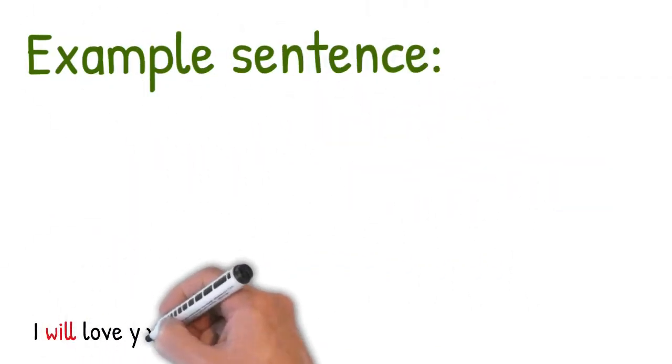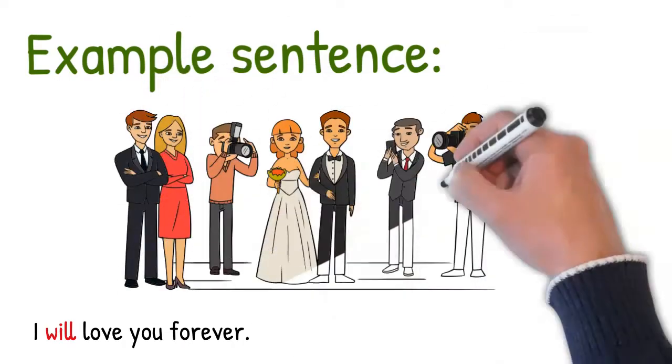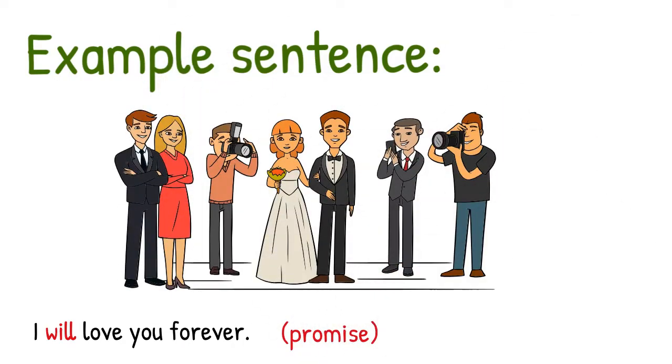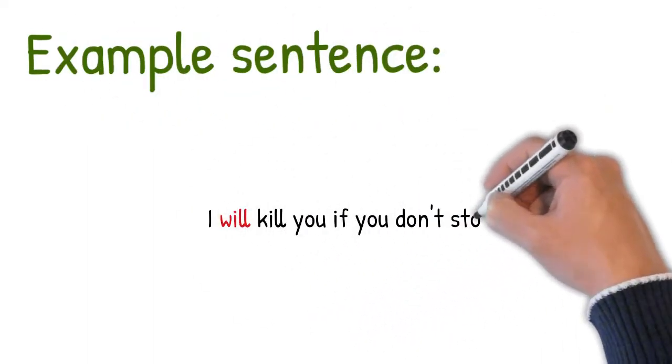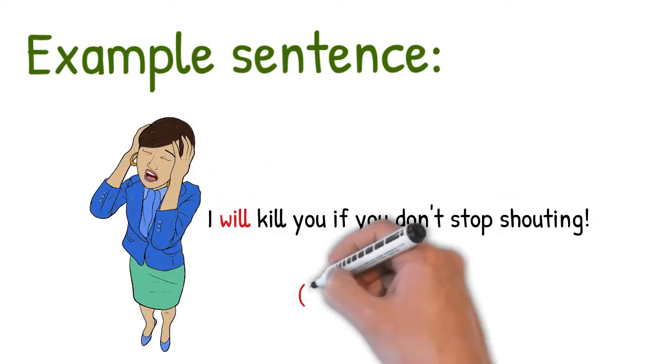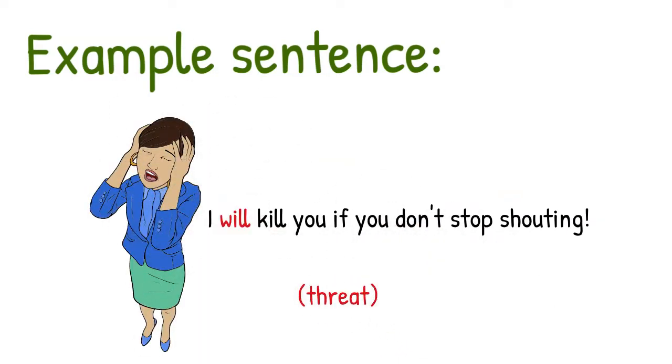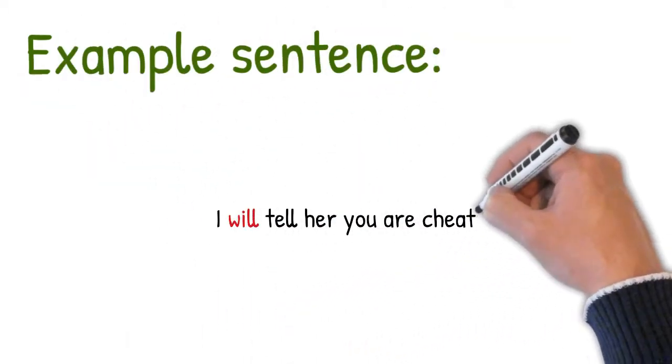Here's another example sentence. I will love you forever. This one's classic. I will love you forever. You make that promise when you take your vows in marriage. And as far as threats go, I will kill you if you don't stop shouting. She doesn't really mean it, but she is threatening to like throw something at your head maybe. It is a threat. So I will is used for threats.